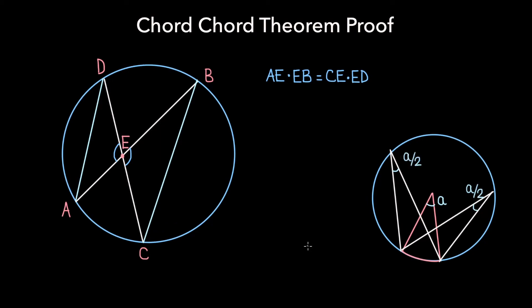Another observation that we can make, which is more relevant to our proof of the Chord-Chord Theorem, is that a given arc subtends the same angle at any point on the remaining circumference of the circle, because that angle must always be A divided by 2.